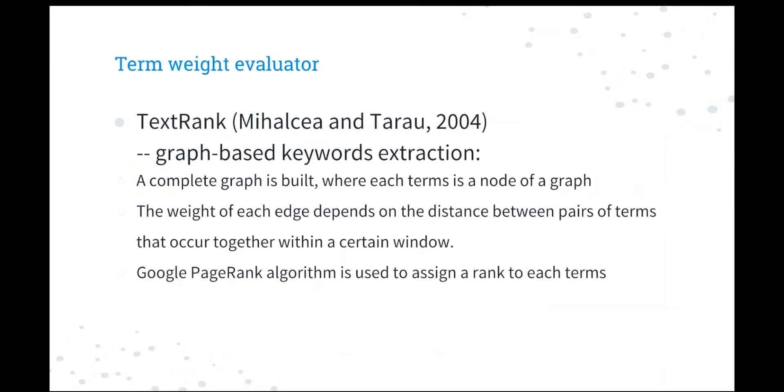We use TextRank to evaluate the importance of each term for a given document. It is a graph-based keyword extraction method published in 2004. Basically, it first builds a complete graph where each term is a node of the graph. And the weight of each edge depends on the distance between pairs of words that occur together within a certain window. And Google PageRank algorithm is used to assign a rank to each term. In this way, the keywords that better represent the content of the document will get a higher weight regardless of its frequency.